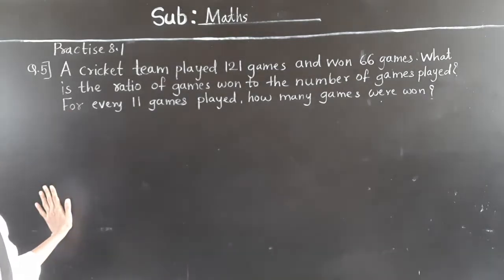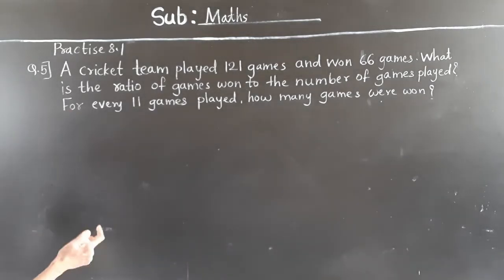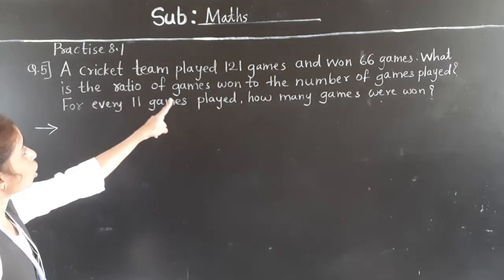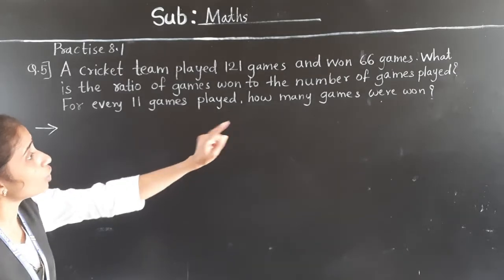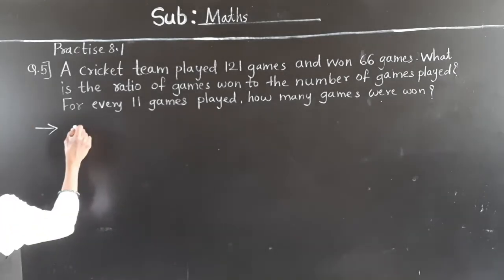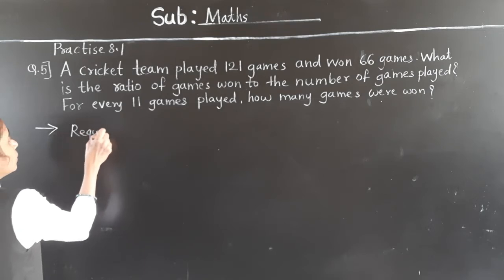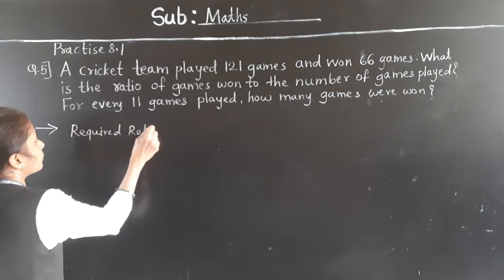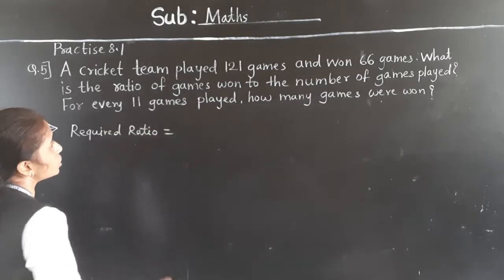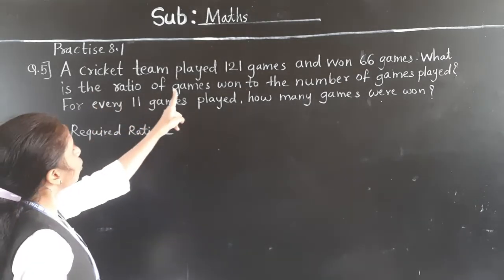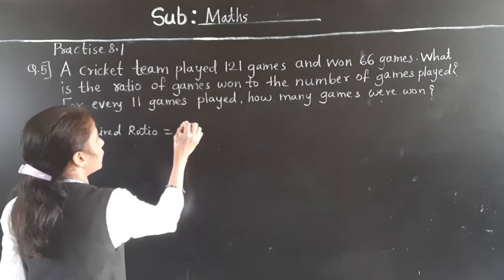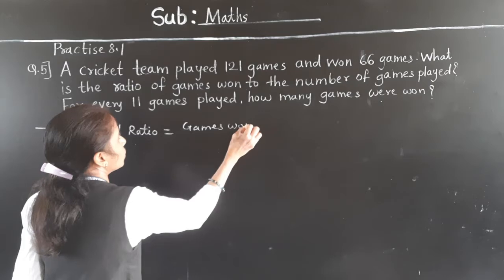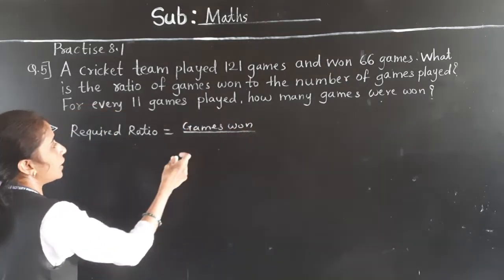We have to find the ratio of games won to the number of games played. So the required ratio is: games won to the number of games played.